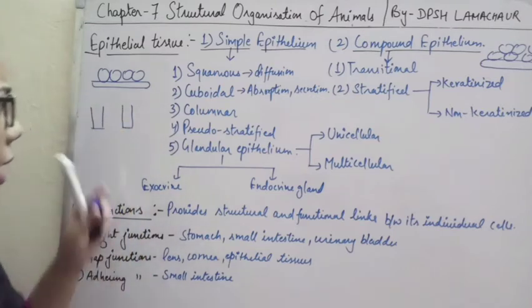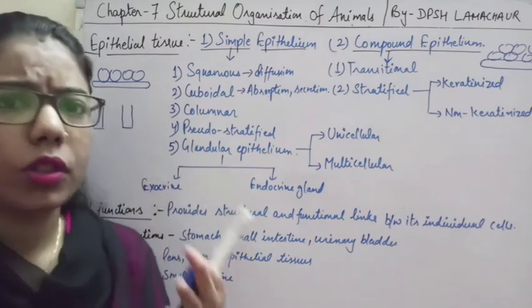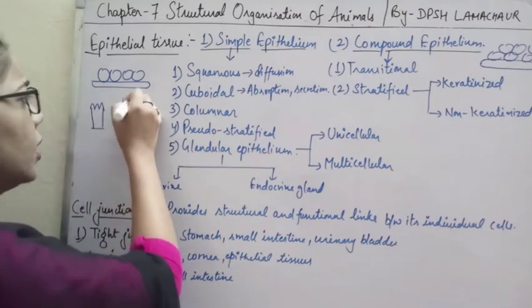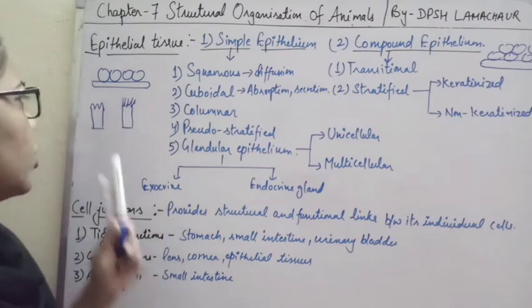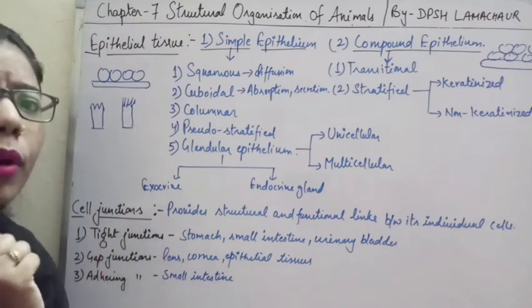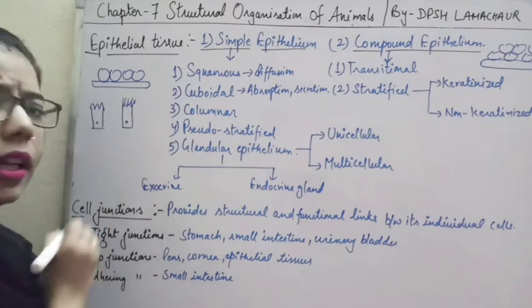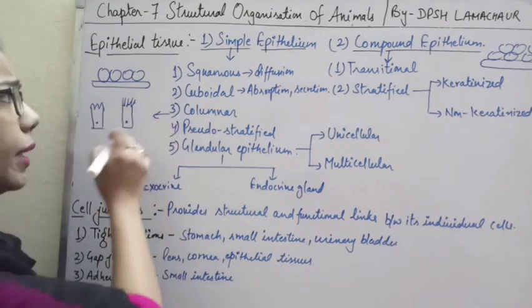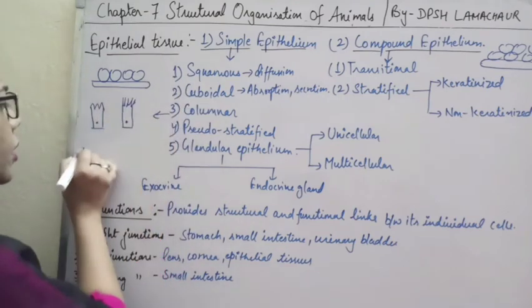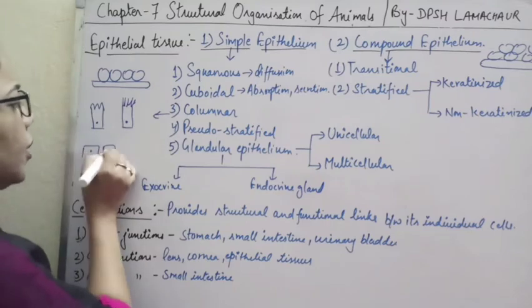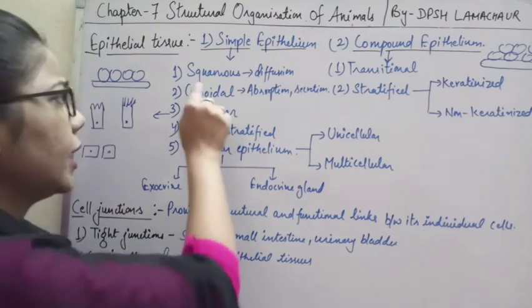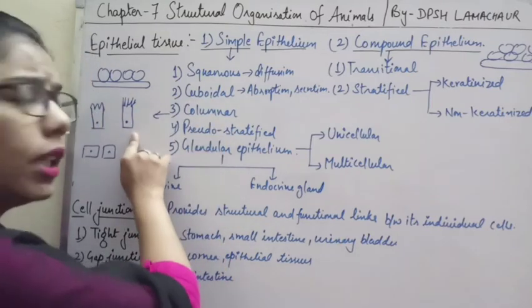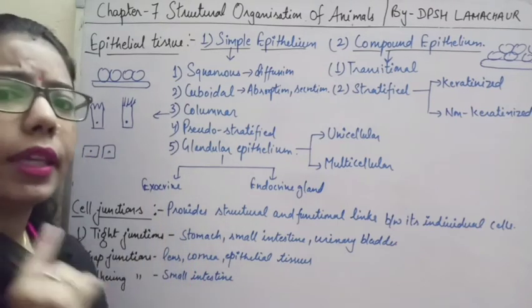Columnar epithelium can be of two types — those having microvilli or those having cilia in their structure. In columnar epithelium, the nucleus is present at the base of the cell, while in cuboidal epithelium the nucleus is situated at the center of the cell.